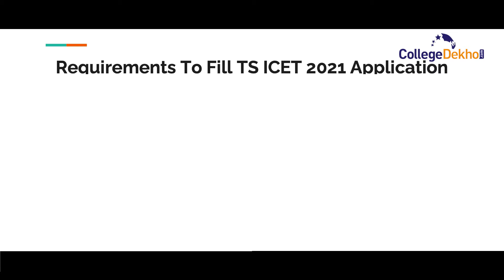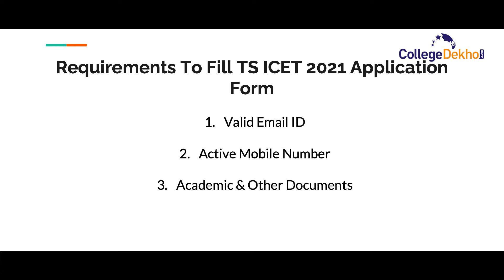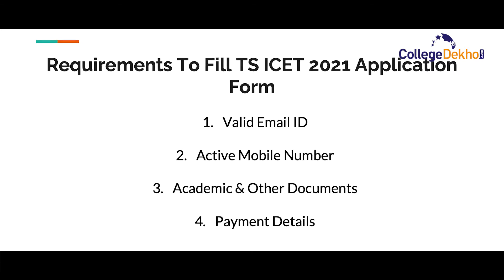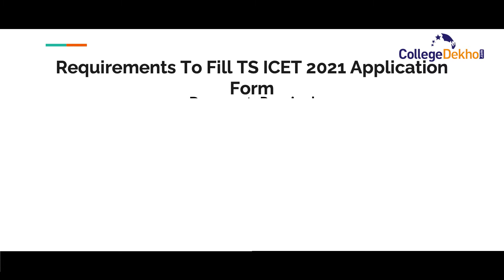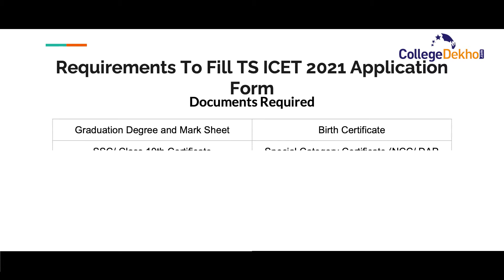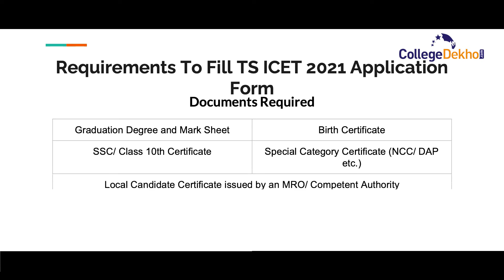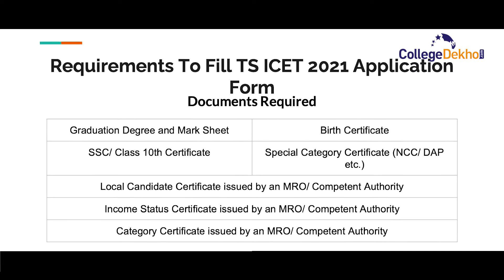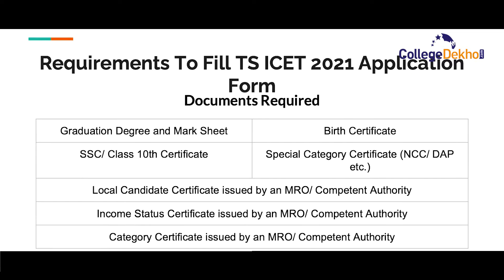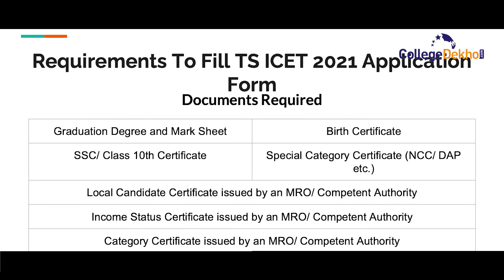When it comes to what a candidate requires to fill the TSISet application form, there are four basic requirements: a valid email ID, an active mobile number, academic and other documents, and payment details. The email ID and mobile number are both required during registration and must be active as verification will be needed. Candidates will not need to upload their documents in the application form — they will only upload their photograph and signature. However, certain information will be needed from these documents, such as date and place of birth from the birth certificate or Class 10 certificate, and the hall ticket number of the qualifying course from the graduation degree certificate or mark sheet.